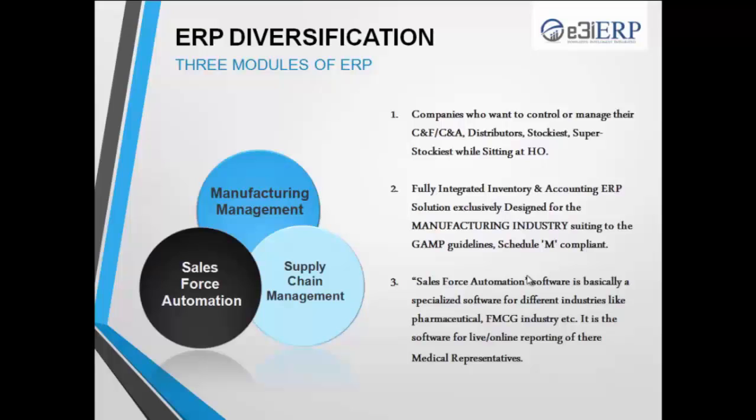Now let's talk about the ERP modules — what software and solutions we provide. We will focus on 3 main departments. The first is supply chain management, where we manage C&F, C&A, distributors, stockists, and super stockists. Next is manufacturing management — our ERP is suitable for all types of processes and guidelines like GMP guidelines and Schedule M compliance, providing step-by-step information from raw materials to final products. The third is sales force automation. SFA is becoming an important part of every company, demanded especially by pharma companies but also by FMCG companies and distributors with a large-scale sales force requiring easy and strong MIS-based reporting.